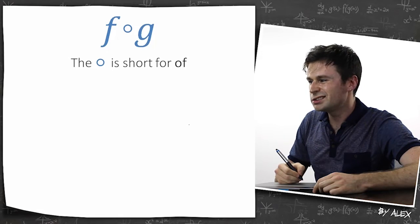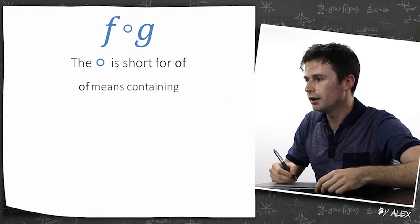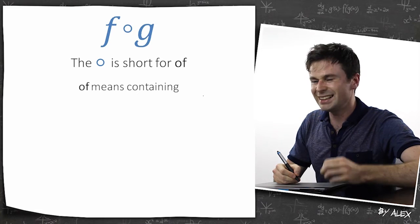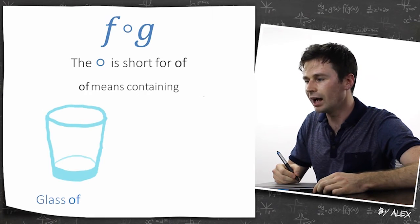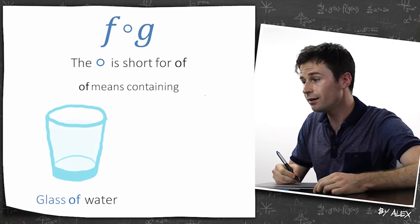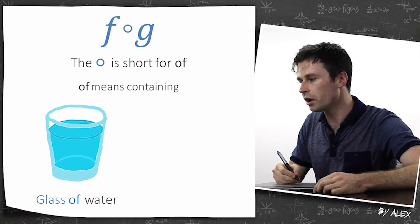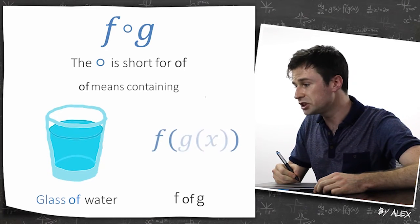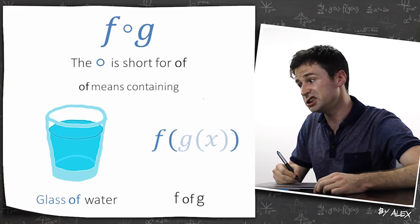The little o is sort of short for of. So if you've got of, that actually means containing. So if you have a glass of water, it means a glass containing water. In the same way f of g is an f containing g.